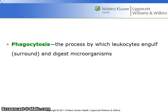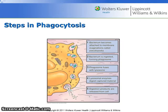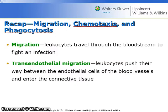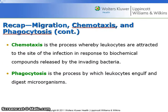To recap: phagocytosis is the process by which leukocytes engulf and digest microorganisms. Transendothelial migration is where the leukocytes push their way between the endothelial cells of the blood vessels and enter the connective tissue. Chemotaxis is the process whereby leukocytes are attracted to the site of the infection in response to biochemical compounds released by the invading bacteria.